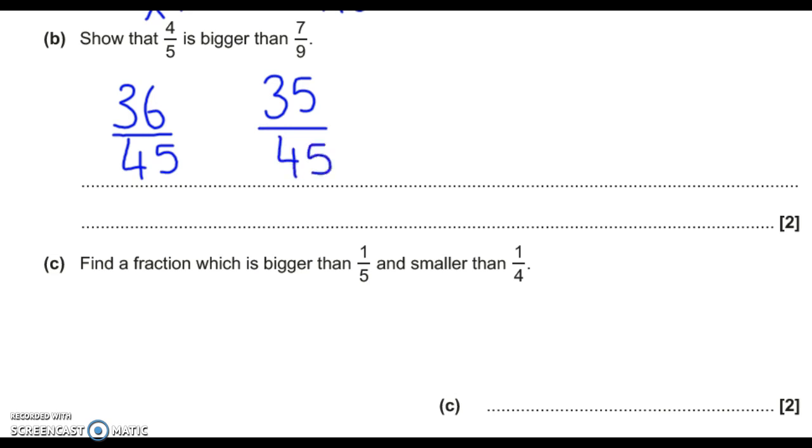Now these fractions have the same denominator, I can look at them and see which is biggest. The biggest one is 36 over 45. That's bigger than 35 out of 45. So therefore, 4 fifths is bigger than 7 ninths. So I just write at the end, 4 fifths is bigger.